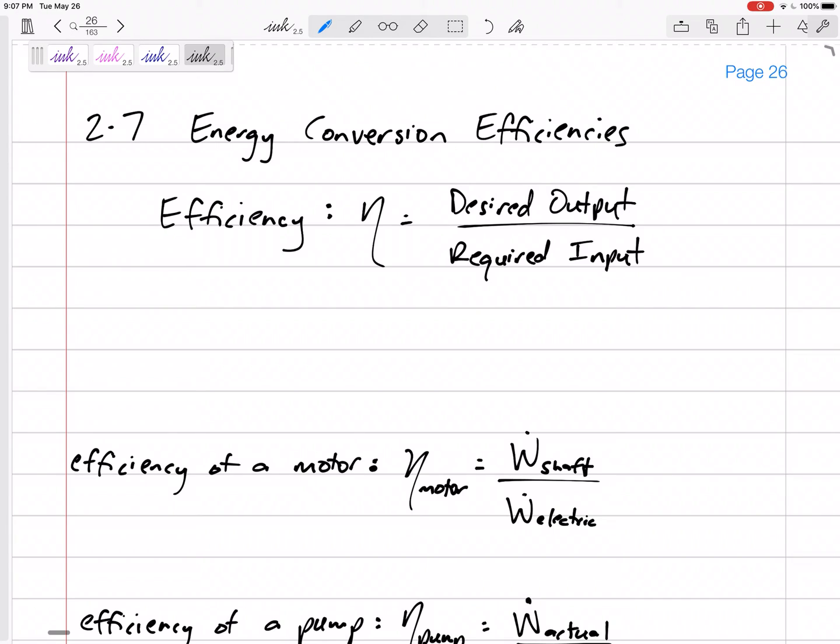So here in section 2.7 we're talking about efficiencies. We're going to call efficiency this eta, and like most efficiencies, efficiency is output over input. This will be less than one because we're going to have to put more into a pump, a motor, a machine than what we actually get out of it because it's not ideal. It's not 100% efficient. So the desired output over the required input is our efficiency.